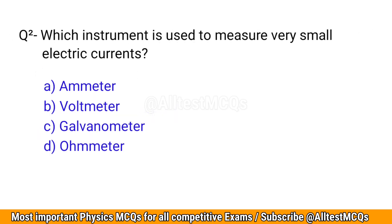Q2. Which instrument is used to measure very small electric currents? The correct option is C: Galvanometer.